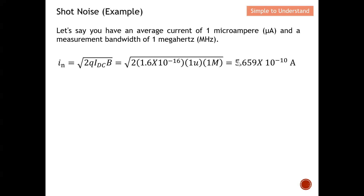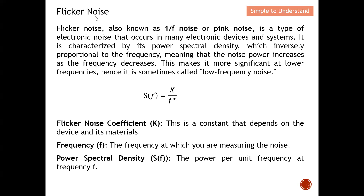The last noise type is flicker noise, which occurs at low frequency. Flicker noise is also known as 1/f noise or pink noise. It is a type of electronic noise that occurs in many electronic devices and systems. It is characterized by its power spectral density being inversely proportional to frequency — the higher the frequency, the lesser the flicker noise. The noise power increases as frequency decreases, making it more significant at lower frequencies, hence it is sometimes called low-frequency noise.